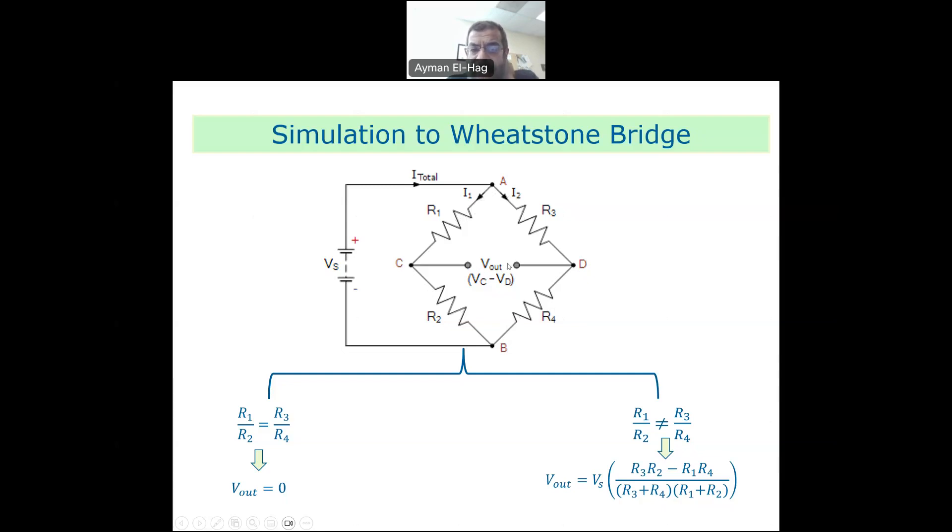And we measure the voltage V output between point C and D. Now, the Wheatstone Bridge runs under two different conditions. The first one we call the balance condition when R1 over R2 equal to R3 over R4. And this will result that the V output is equal to zero. And that's what we call the balance condition.